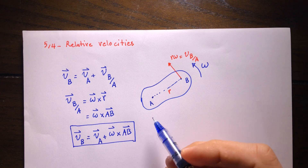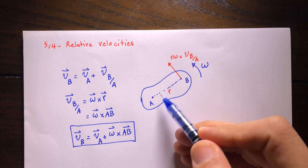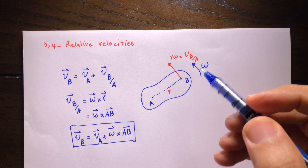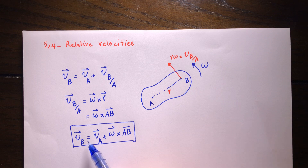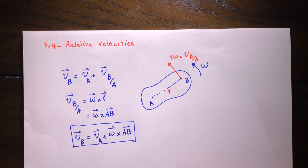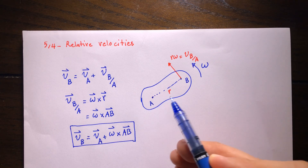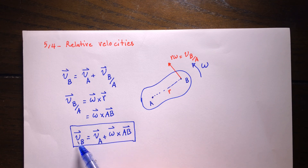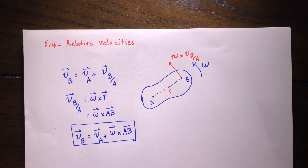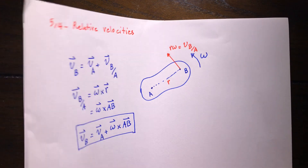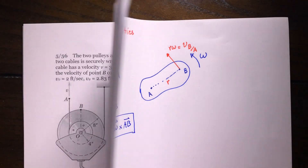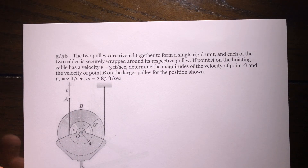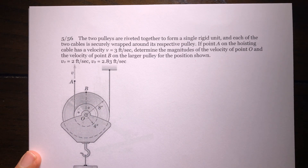Sometimes in problems we know something about the velocity of A and something about the velocity of B but not ω, so we can use this equation to find ω. Other times we know the velocity of A and ω and are looking for the velocity of B. Let's work on an example — Problem 5-56 from Chapter 5.